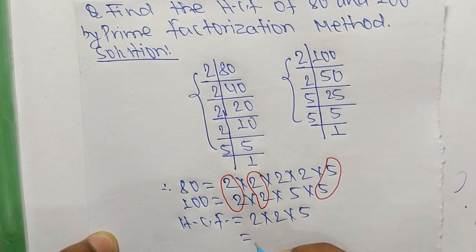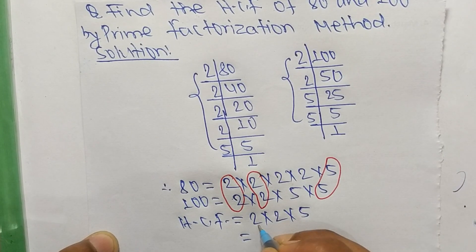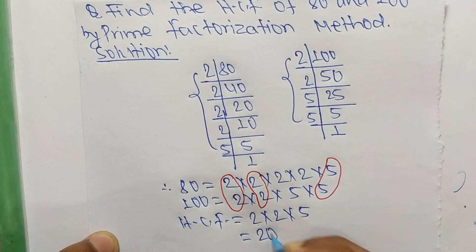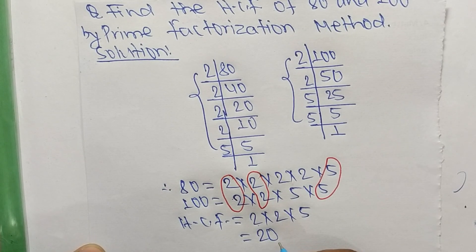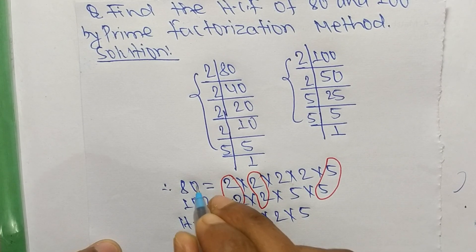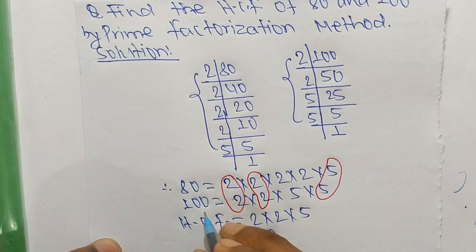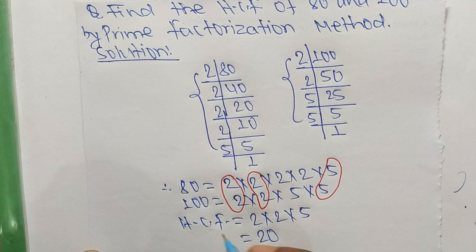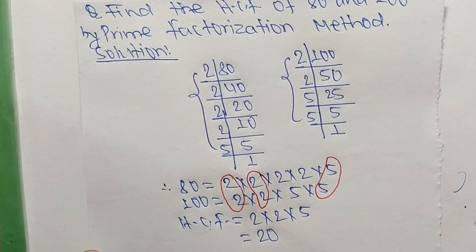So 2 times 2 makes 4, and 4 times 5 makes 20. Therefore 20 is the HCF of 80 and 100. That's all for today, thanks for watching.